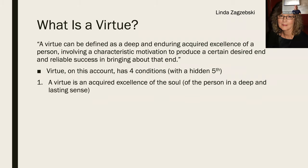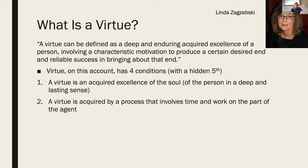First, a virtue is an acquired excellence of the soul — some deep lasting feature of whatever makes you you, whether you think that's a soul or just neurons firing. The part of you that you're talking about when you say 'this is a feature of me that's just part of who and what I am.' A virtue is an excellence of that part of you. It's also acquired by a process that involves time and work. You don't just pull the lever and choose the right answer to be good. To have a virtue, you have to learn it and habituate. It's a character trait you build over time — there's no character trait that just occurs; we have to train them, sort of like skills.